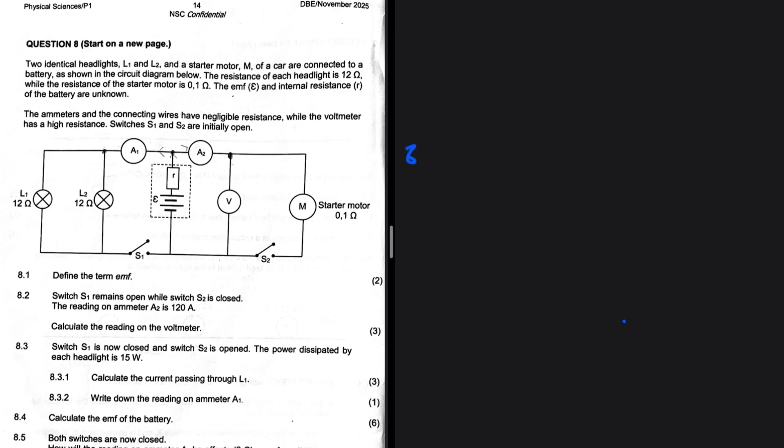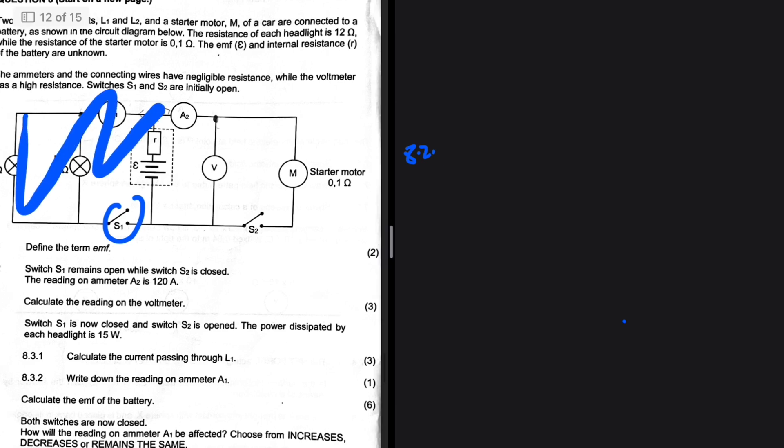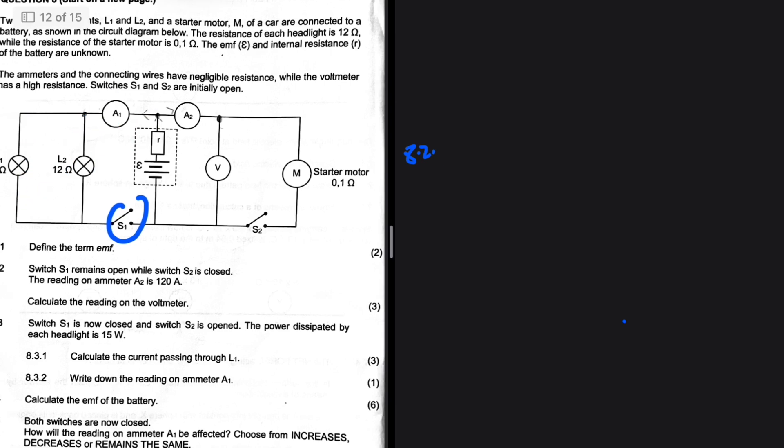Calculate the reading on the voltmeter. Okay, 8.2. Let's take a look at our sketch and see what is happening. So switch S1 remains open, so switch S1 is open there, and then switch S2 is closed. So what does that mean? It means that there's no current going in that direction.